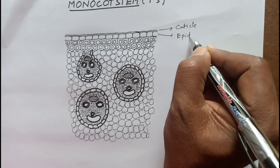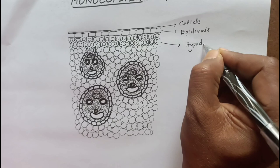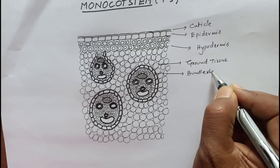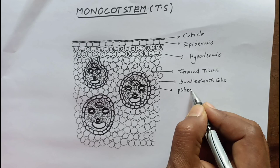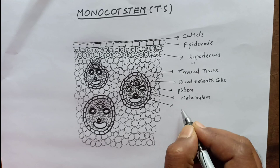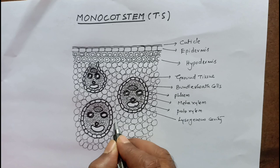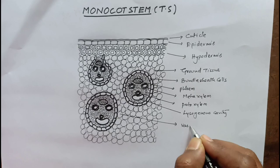This is the cuticle. This is the epidermis. This is the hypodermis. This is the ground tissue, made up of parenchyma. These are the bundle sheath cells. This is phloem, this is metaxylem, this is protoxylem, and this is the lysogenous cavity. This is the entire vascular bundle. Completed — thank you for watching, hope you like this.